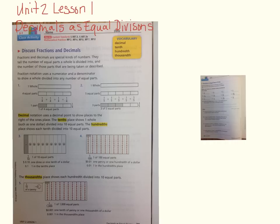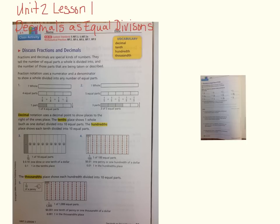Fraction notation uses a numerator and denominator to show a whole divided into any number of equal parts. We just left fractions and we know that to be true—there's a numerator, a denominator, and a whole number. If you look at number one here, you'll see that we have one whole, then we have that same whole divided into four equal groups. If we were to say one of those equal groups, it would be one-fourth.